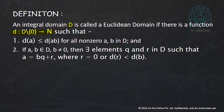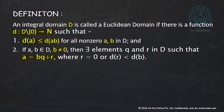The first property: for any two nonzero elements a and b in the integral domain, d(a) is less than or equal to d(ab). The second property: for any two elements a and b in D such that b is nonzero, there exist elements q and r in D such that a equals bq plus r, where either r is 0 or d(r) is strictly less than d(b). If such a function exists, then we call D a Euclidean domain.